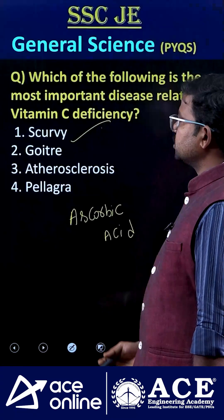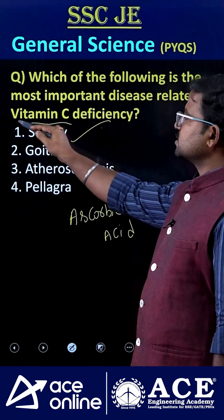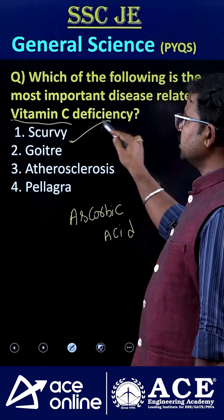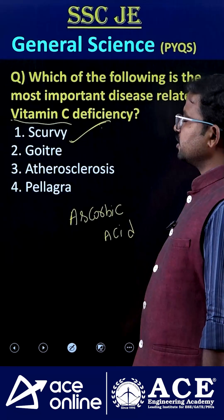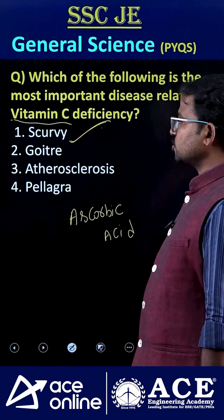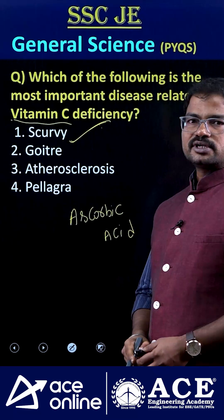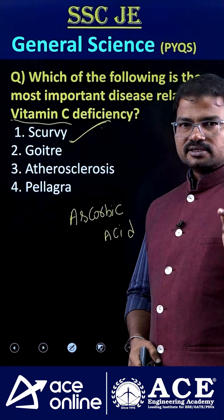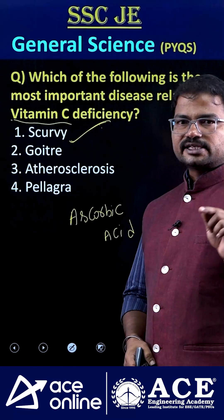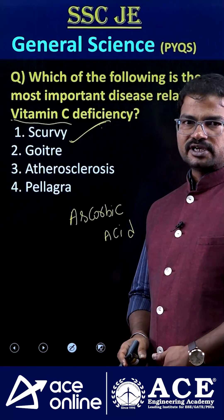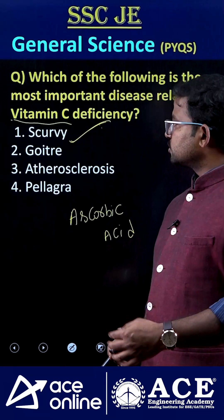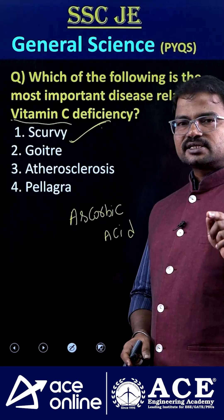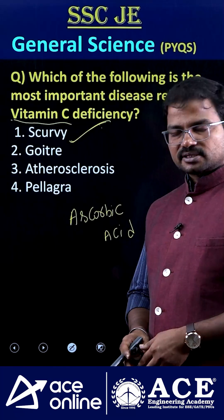Scurvy is caused by the deficiency of vitamin C only, which is why option one is correct. As for goiter — which deficiency is responsible for goiter? If you know the answer, please comment. Thank you.